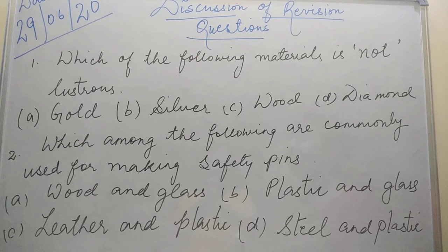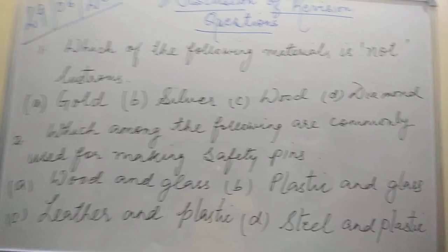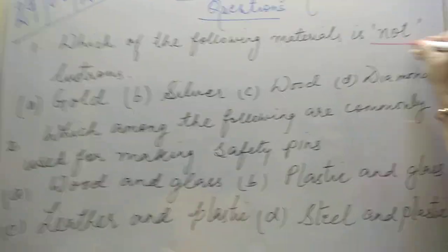Which of the following material is not lustrous? Lustrous means shine. Gold is having shine, so it is correct. Silver is having shine, it is correct. You have to find not.